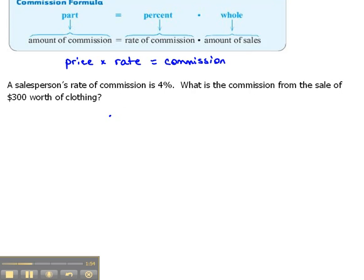Well, again, it depends on how much she sold or he sold. So, if they sell $300 worth of clothing and their commission rate is 4%, then remember we work with the decimal, so we need to change that over to .04.